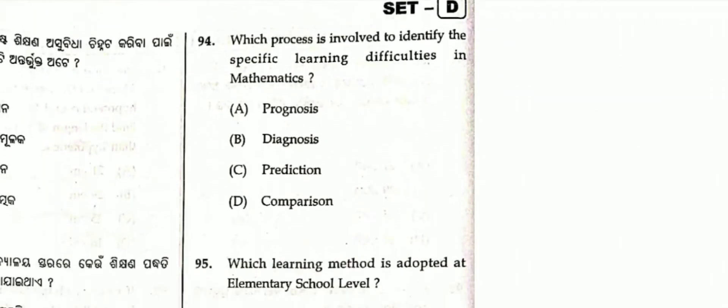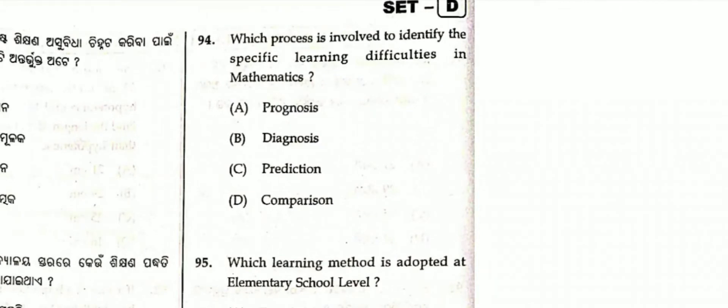Question number 94: Which process is involved to identify specific learning difficulties in mathematics? The options are prognosis, diagnosis, prediction, and comparison. The answer is diagnosis. Option B is correct.